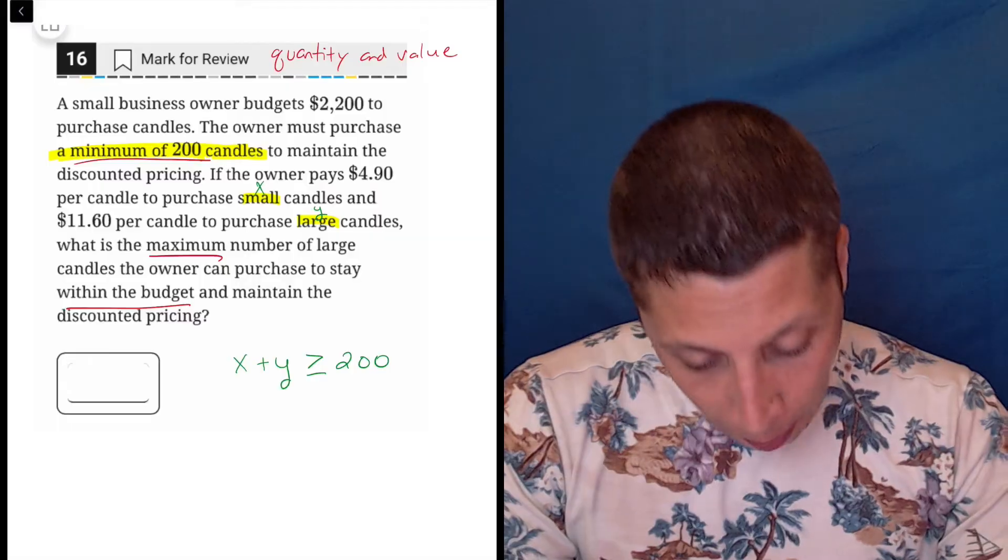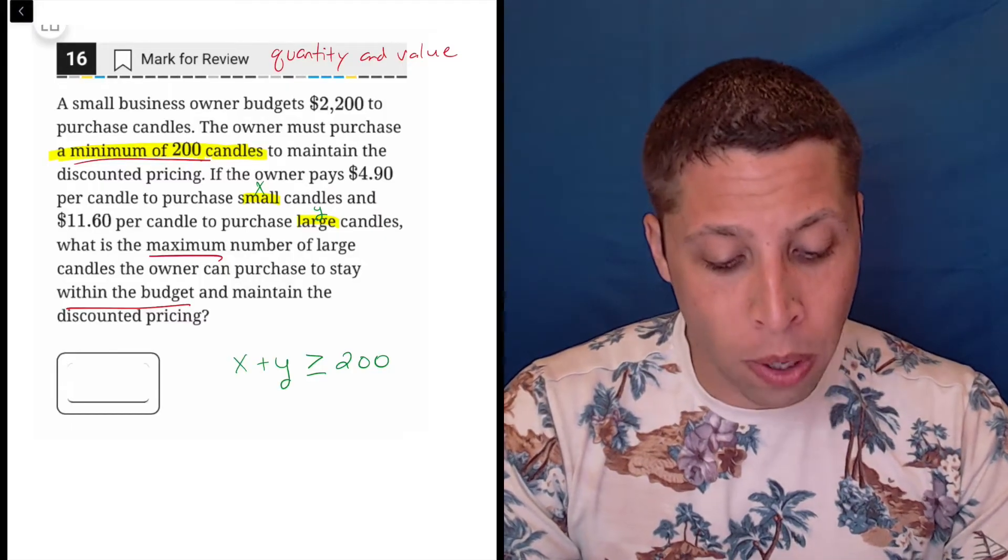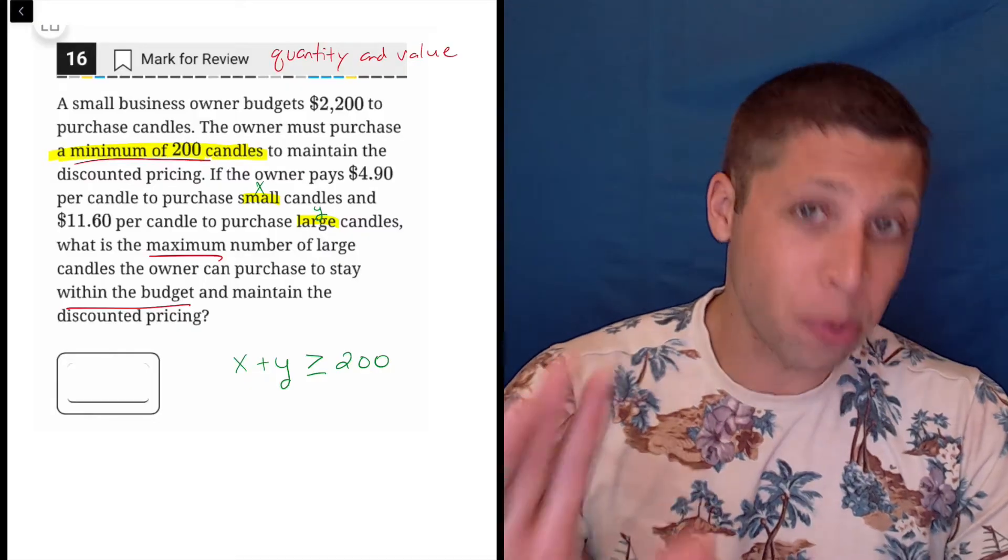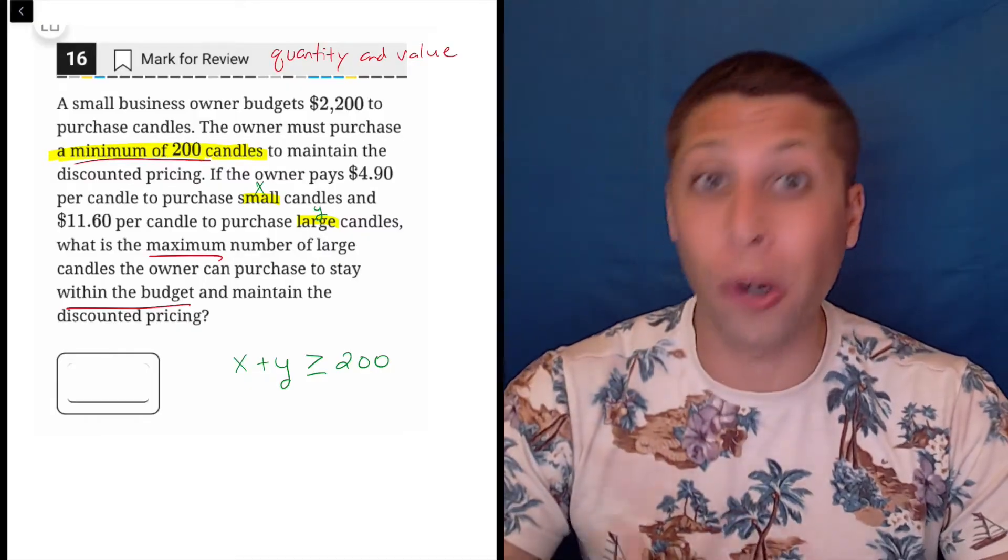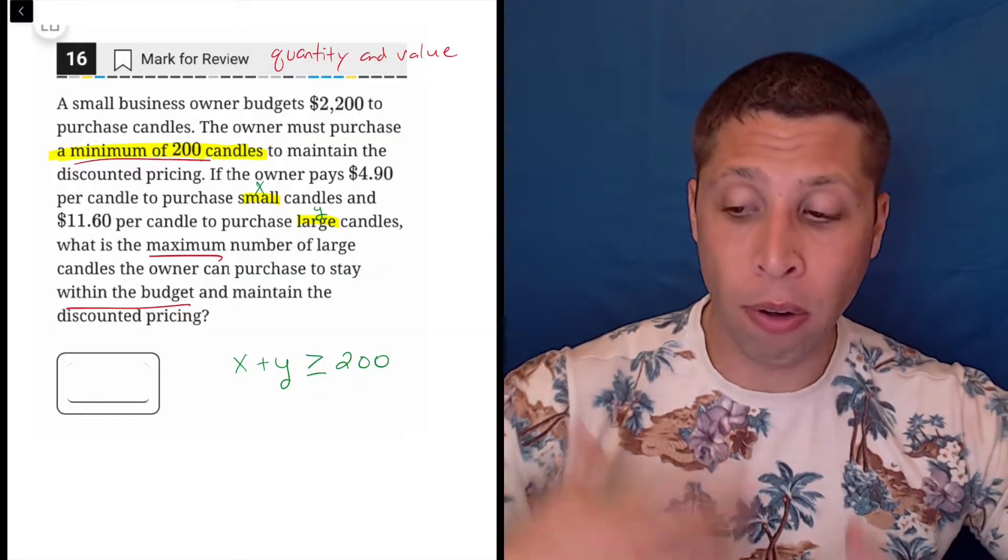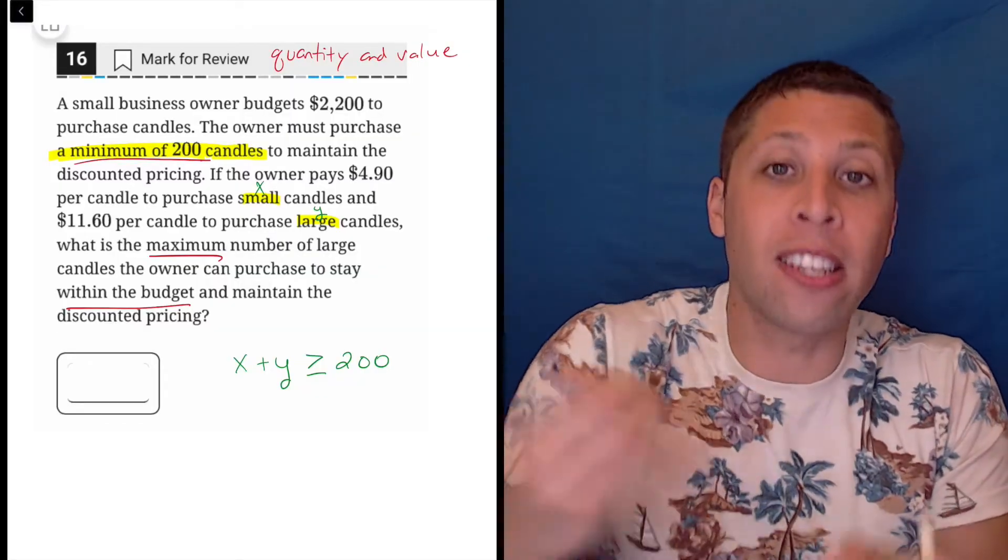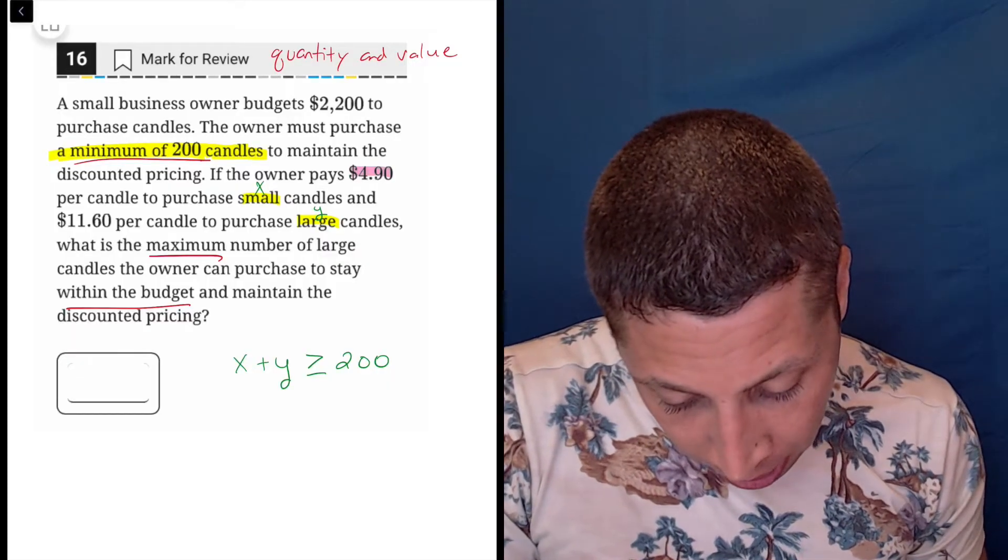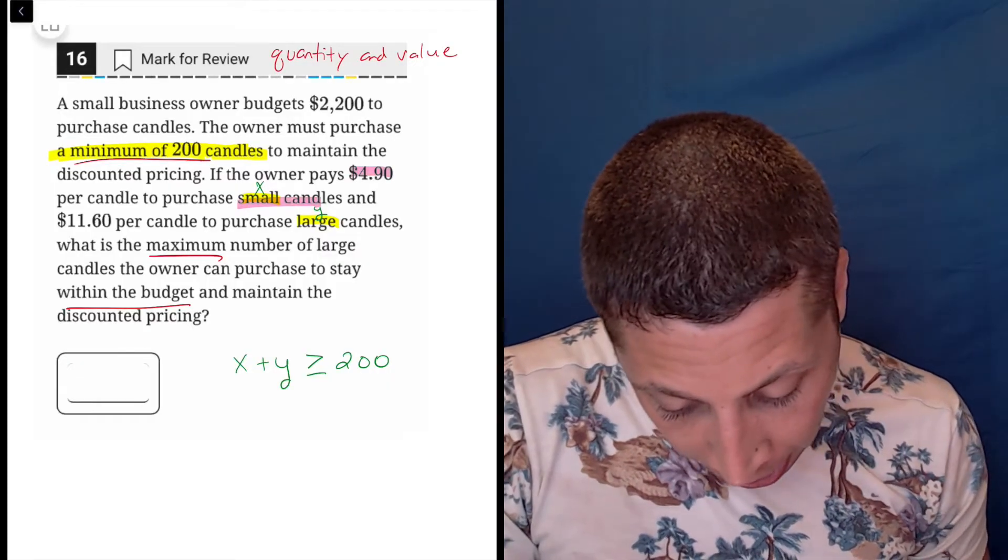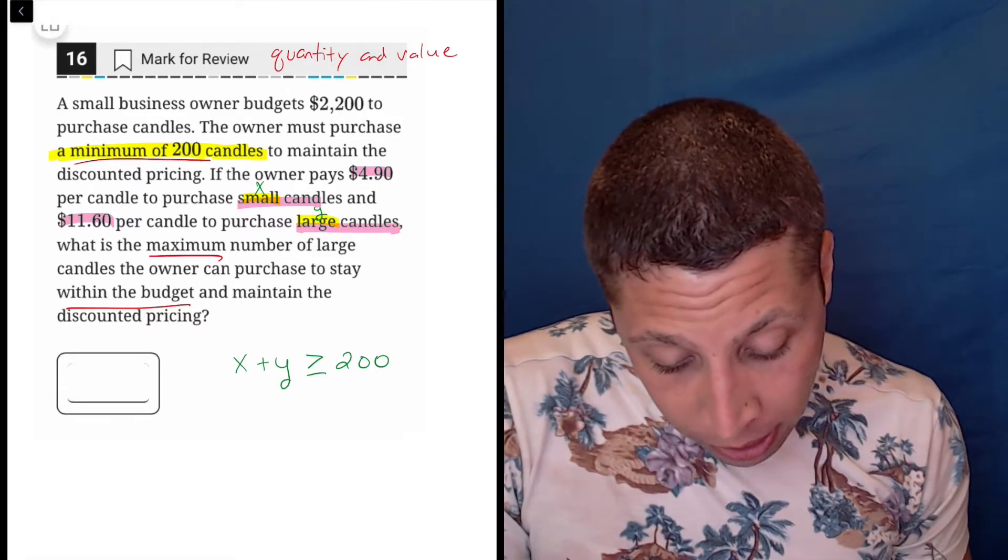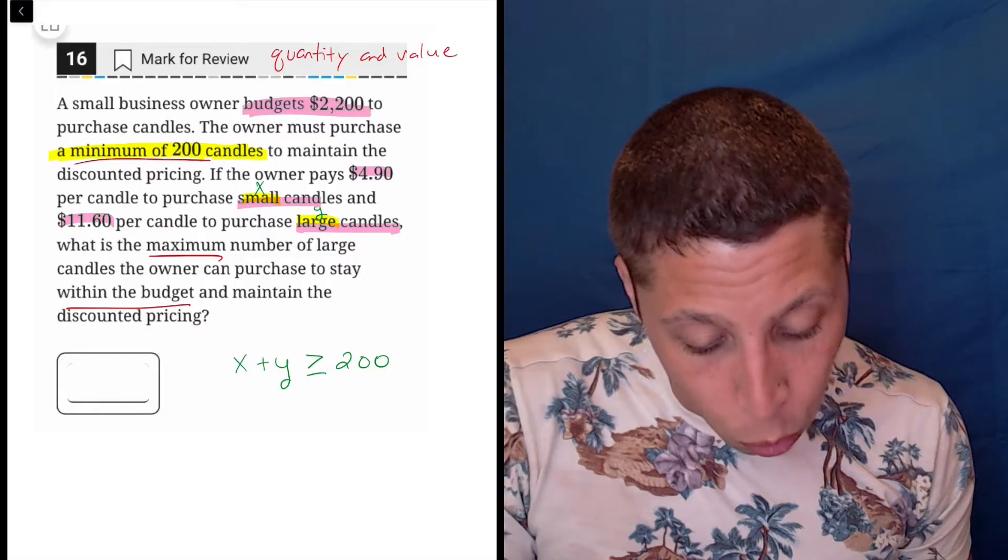The other one is more complicated. It represents the value of these candles. So in many cases, the value is represented by money in this case, but it doesn't always have to be. Sometimes it's like points scored or something like that. So it's a loose term to represent that each of these things is worth something. So in this case, it's $4.90 for a small candle and $11.60 for the large candles.